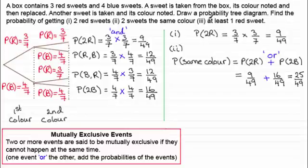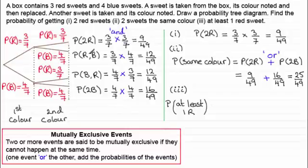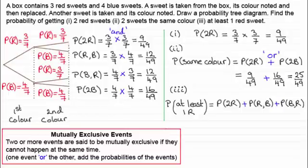For part three, we've got to work out the probability of at least one red sweet. We can have two red sweets — that counts as at least one red. We can also have a red followed by a blue, or a blue followed by a red. So we add up these three probabilities: 9/49, 12/49, and 12/49. These events are mutually exclusive — they can't happen at the same time — so we add them, giving a total of 33/49.